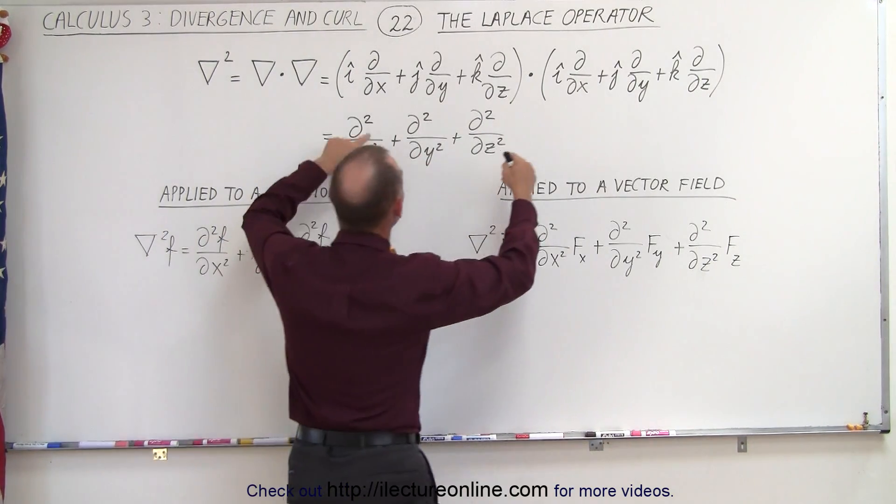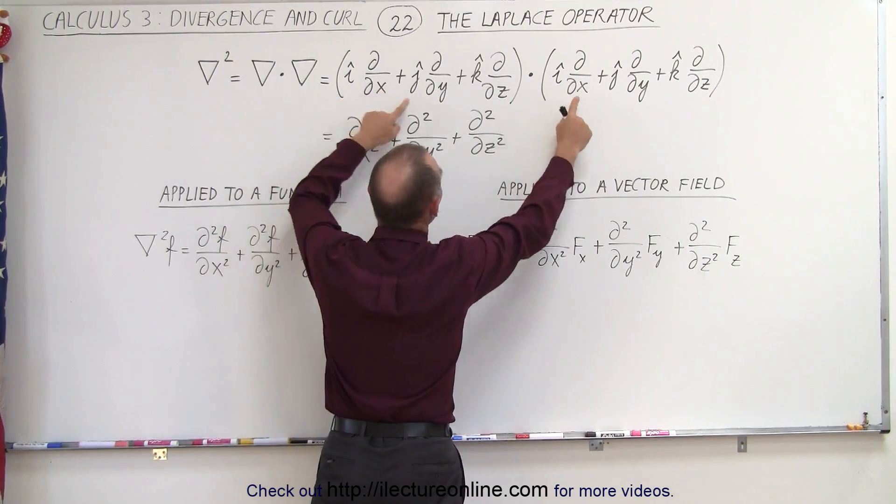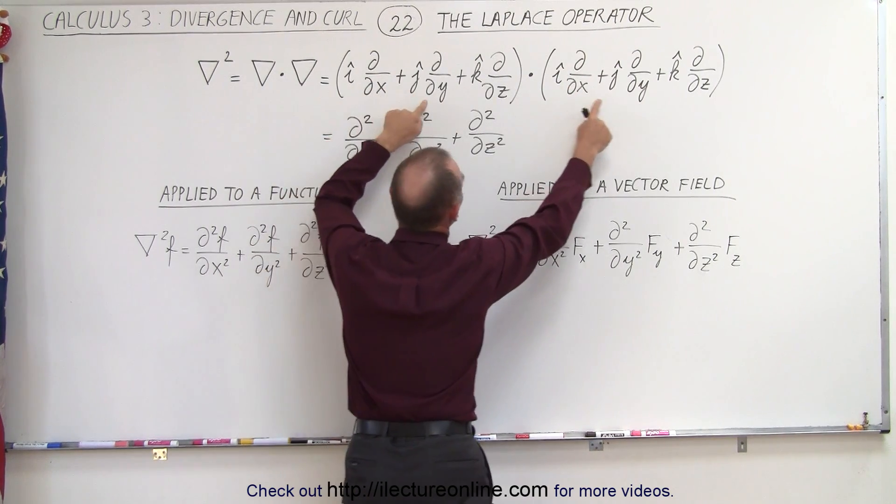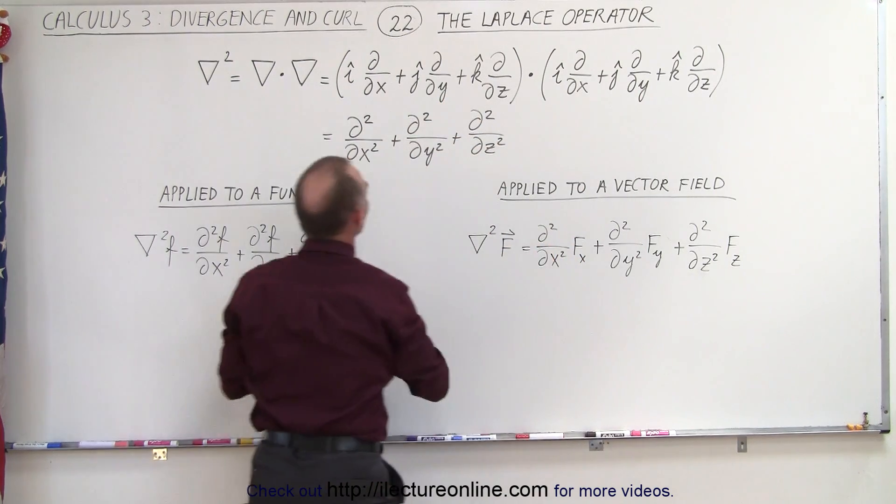when you multiply these together, the i, j, and k components drop out and we simply multiply the x components together, the y components together, and the z components together,